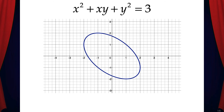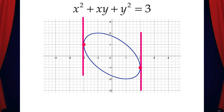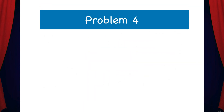Here we have a graph of this relation x squared plus xy plus y squared equals 3, and we can see that at the points negative 2, 1 and 2, negative 1, the slopes of the tangent lines are undefined. Let's do one more example problem.